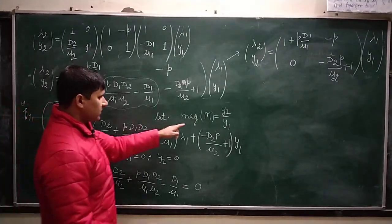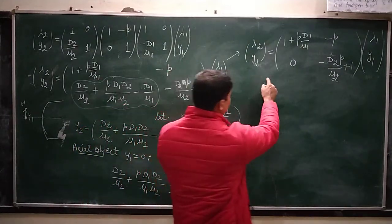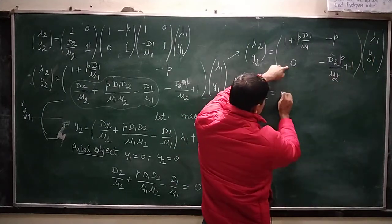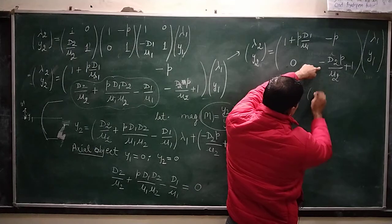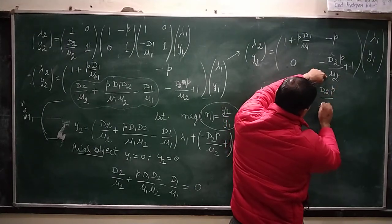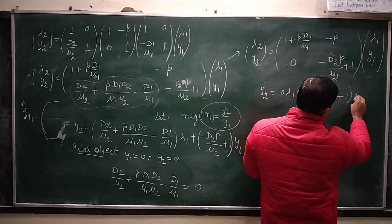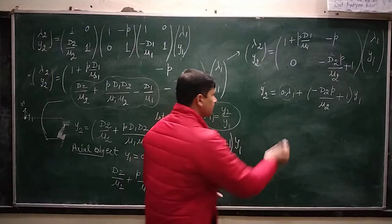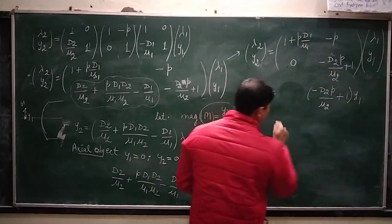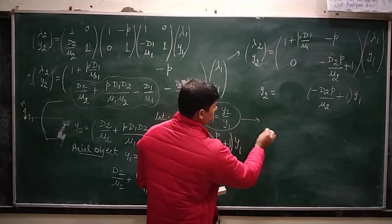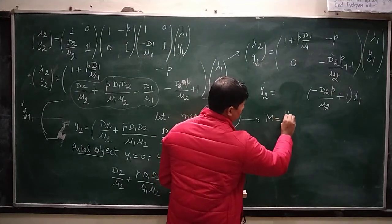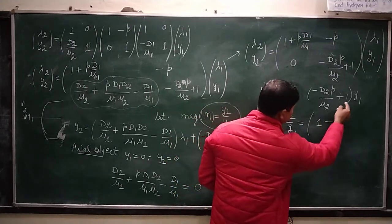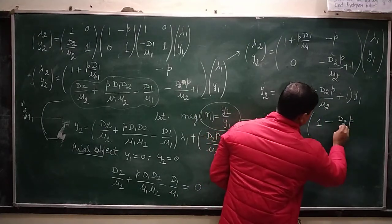We have to find the lateral magnification, which is the ratio of y2 to y1. From this matrix equation, y2 equals 0·lambda1 + (1 - D2·P/mu2)·y1. The factor with lambda1 is zero, so taking the ratio of y2 to y1 gives the lateral magnification: m = y2/y1 = 1 - D2·P/mu2.